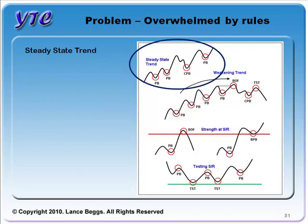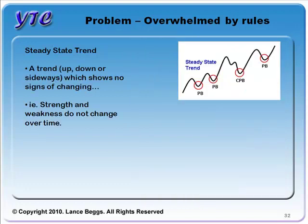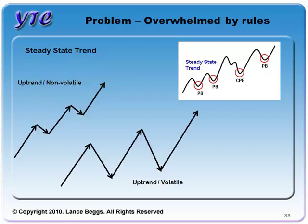Let's start at the top left of the poster: the steady state trend. A steady state trend is essentially a trend — up, down, or sideways — which shows no signs of changing. Strength and weakness do not change over time. Consider an uptrend first: it might be a non-volatile trend with only short pullbacks, or it might be a volatile trend with pullbacks that retrace almost 100% of the previous extension.